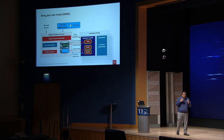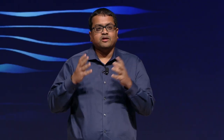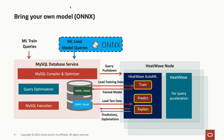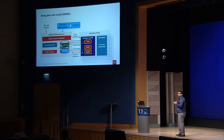If your team of data scientists is attached to a particular cloud service and has their own training code and complex models, HeatWave AutoML allows you to import external models into the service via a format called ONNX. ONNX is a popular machine learning model serialization format — any model trained using TensorFlow or PyTorch can be exported to ONNX. You import that model using a simple import API and we can do predictions and explanations on it.